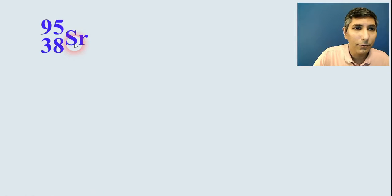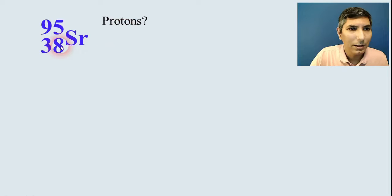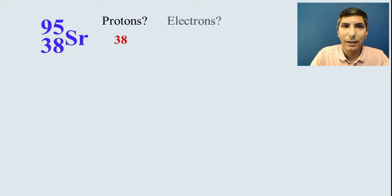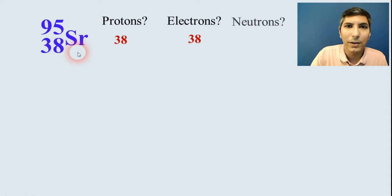We can do some practice with this. If we have this isotope of strontium, how many protons? That number on the bottom, the atomic number tells us it's 38 protons. And electrons, it's the same, 38 electrons, because there's no evidence that this is ionized in any way. And then neutrons, we have to subtract 95 minus 38. So that looks to be about 57 neutrons.